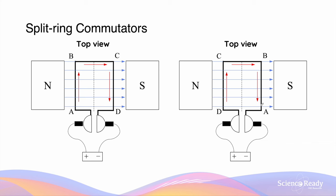So the actual direction of current through the whole armature has not changed, but the specific direction of current flowing through each side of the armature — that is, A, B, C, D — has been reversed.